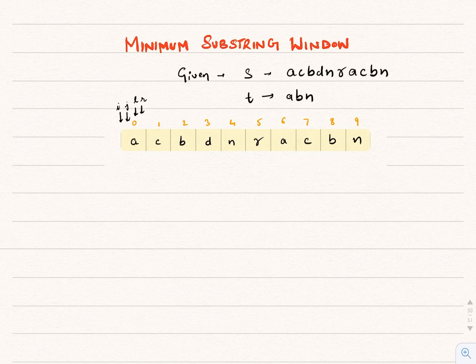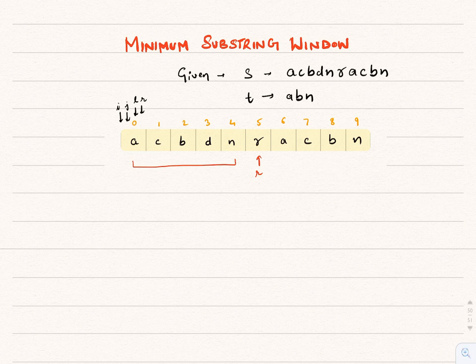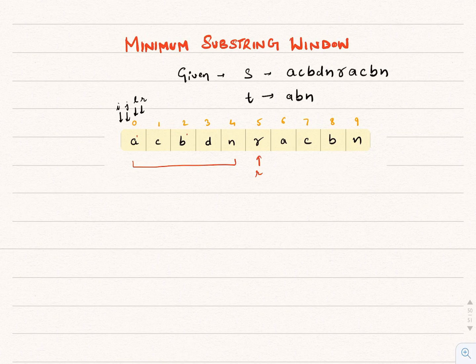Variable R will increment till it reaches the end of the string. When it reaches index 5, it has covered all characters present in pattern T. We can assign this window as a candidate answer — it holds A, B, and N.